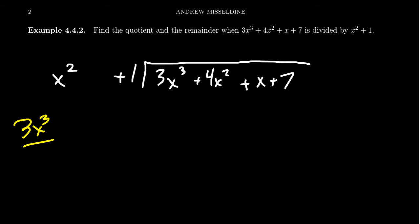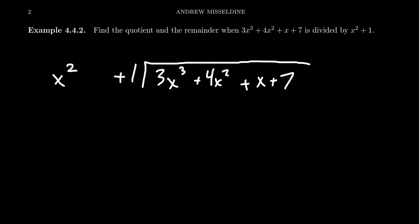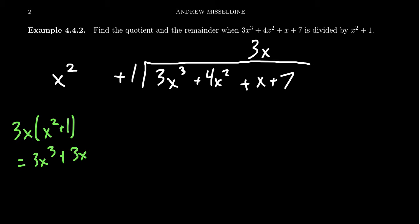We think of 3x cubed divided by x squared, and that gives us 3x. We record that 3x on top of our division bar. Since it's an x term, I'm going to write it above the x column — so the 3x goes above the x. Then we take our partial quotient, 3x, and multiply it by x squared plus 1. This gives us 3x cubed plus 3x.